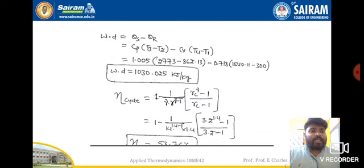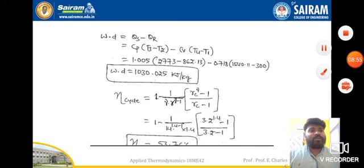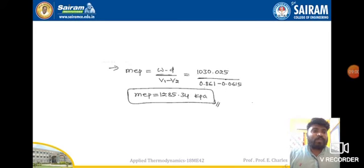Using those values we can calculate work done. The diesel cycle efficiency formula is: η = 1 − [1 / (r^(γ−1))] · [(rc^γ − 1) / (γ·(rc − 1))]. Substituting all the known values found so far, the cycle efficiency comes out to 53.76%.